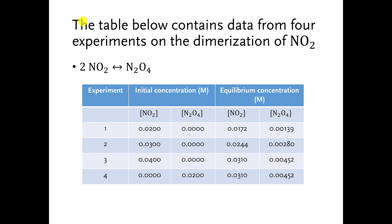So it says the table below contains data from four experiments, experiment 1, 2, 3, and 4, on the dimerization of NO2.